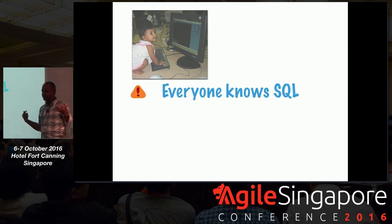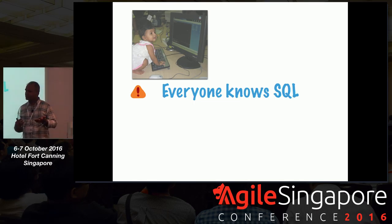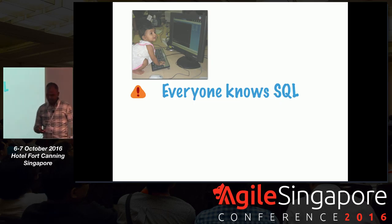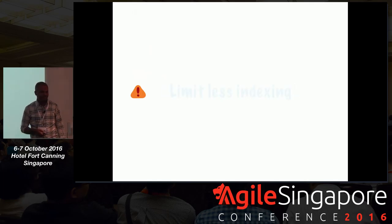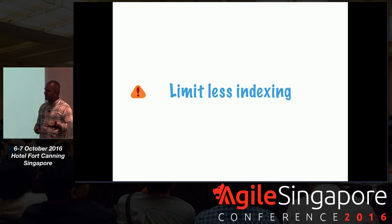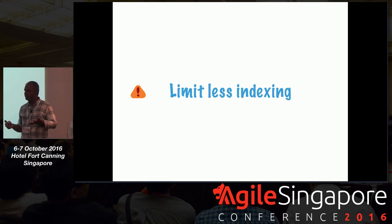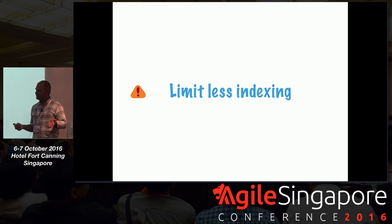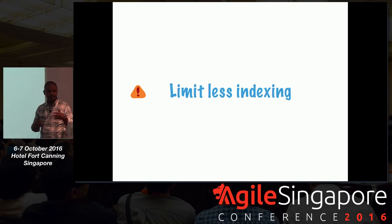Replacing a relational database with something that doesn't support this querying paradigm is mind-boggling to a lot of people. Adoption-wise it becomes difficult. The other thing is limitless indexing — if you come up with a table schema and later figure out you need to query in a different way, you just add an index and it magically works. That notion of limitless indexing is one of the reasons we use relational databases.